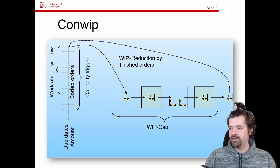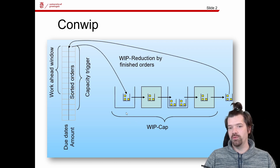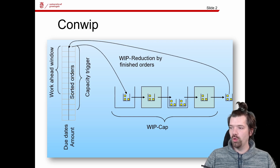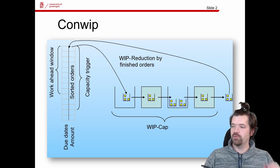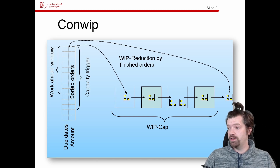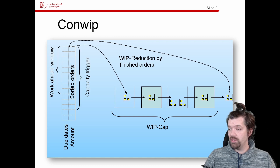There are also dispatching rules — one connected to entering production orders into the system, and others applied in front of the machines. This is not unique to CONWIP; in all other queuing systems such as backward scheduling and MRP, queues in front of machines also have dispatching rules applied, such as first-in-first-out or earliest due date. With just two basic input parameters, we can define a CONWIP system.